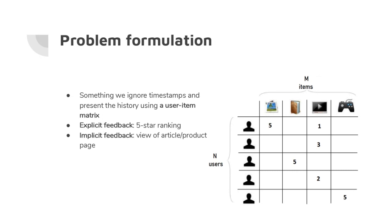Explicit feedback is ratings about the quality of an item. We often also have implicit feedback — just a page view, which makes the matrix binary: either you've seen an item or you haven't. The goal is to find out which items a user is interested in — for example, predicting whether the first user might like the book or the PlayStation, what they're most likely to click on next.